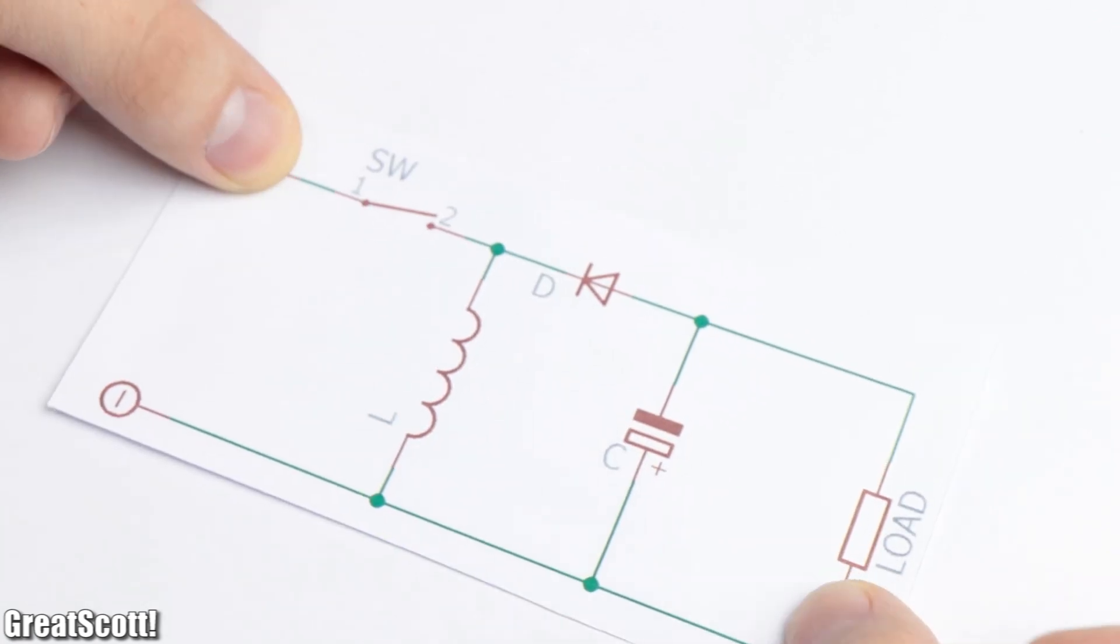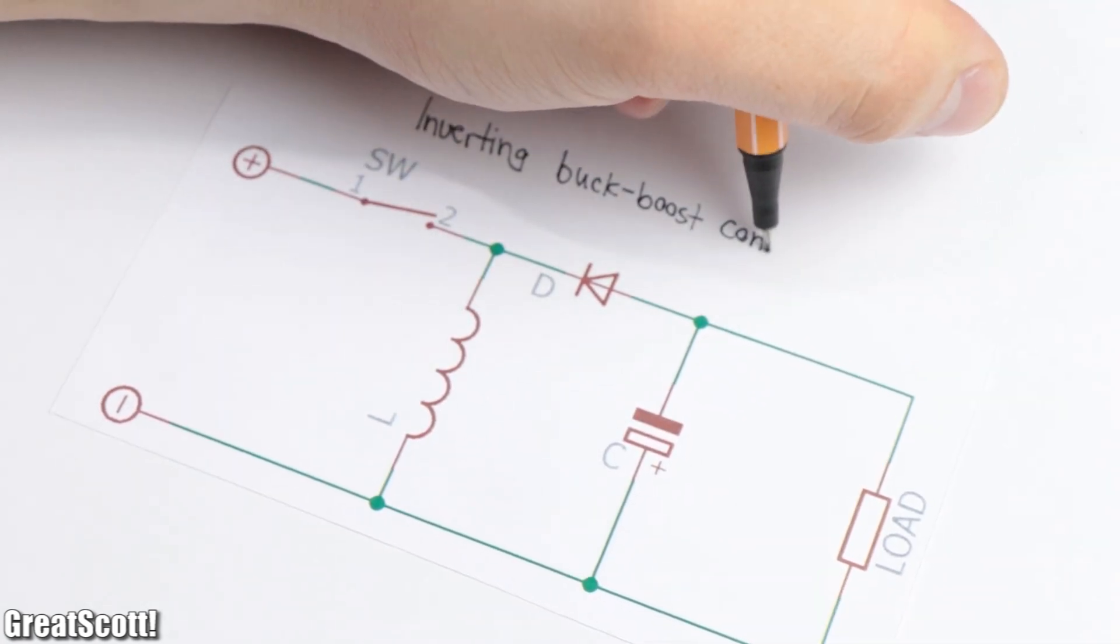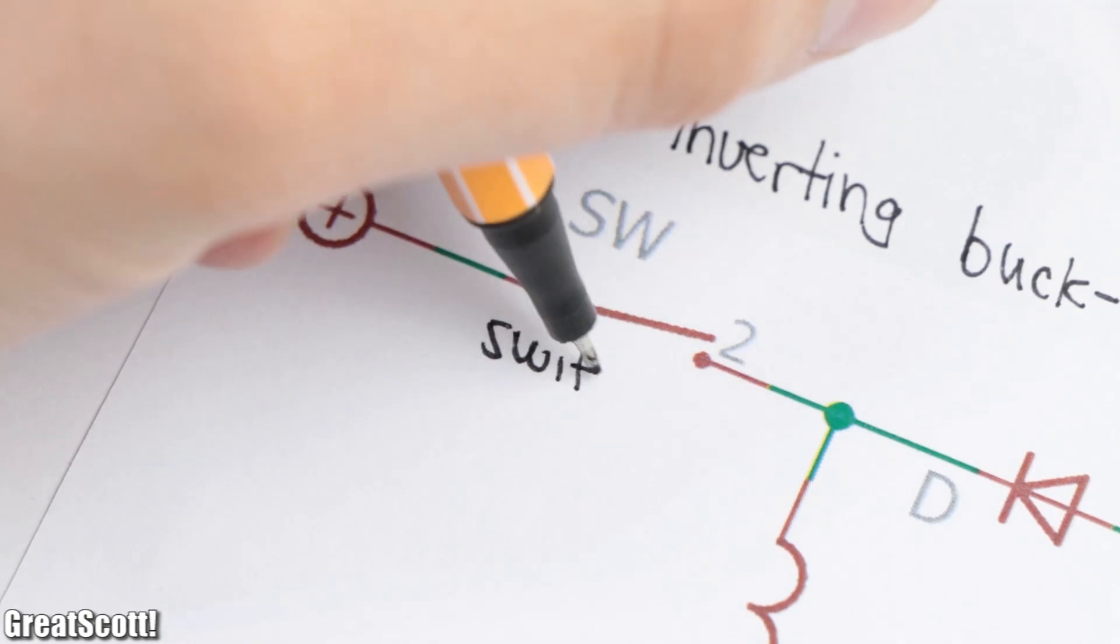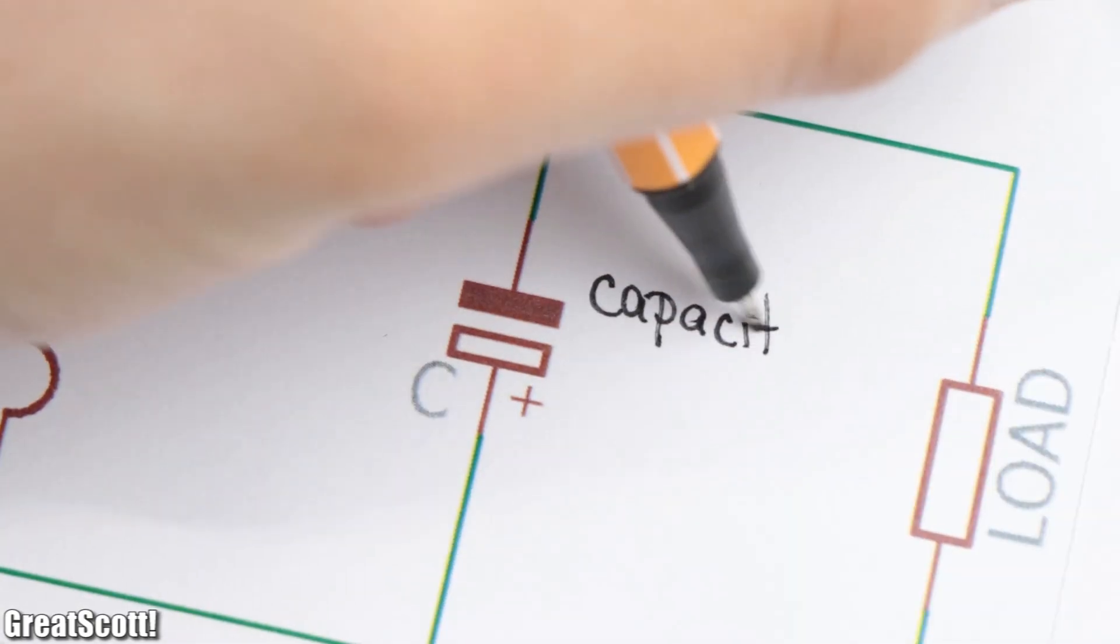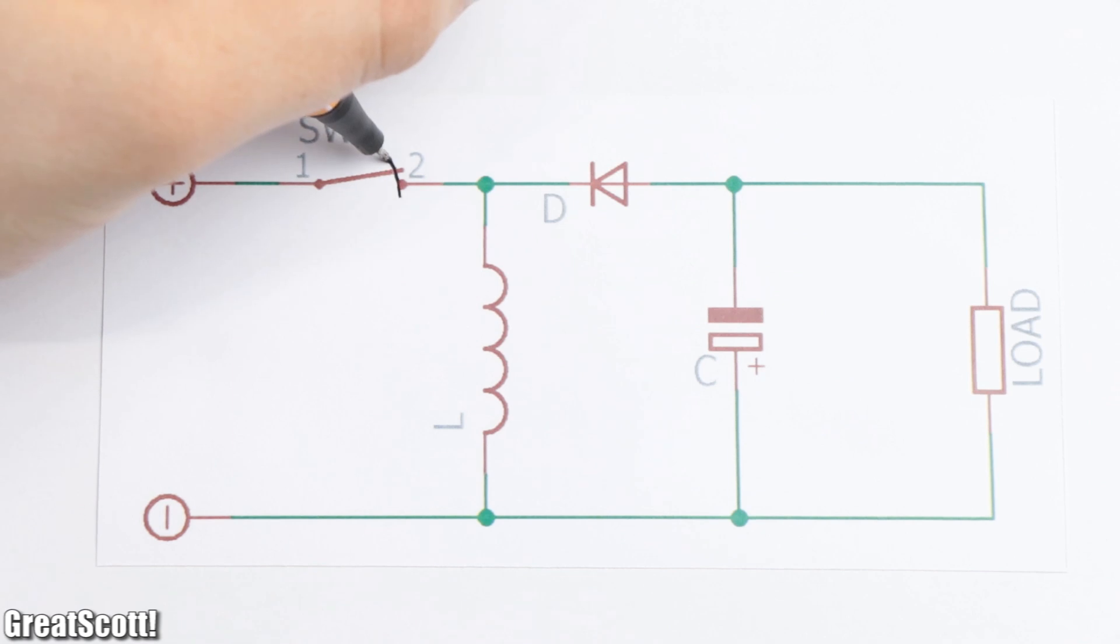The simplest would be the so-called inverting buck-boost converter, or flyback converter. All we need is a switch, a coil, a capacitor, and a diode. When the switch is closed, current flows through the coil.